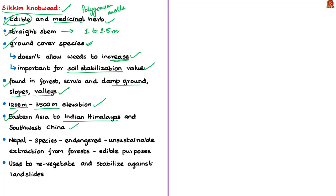The species is available in Bhutan, India, Indonesia, northern Myanmar, Nepal and Thailand. Particularly in India, it is found in the Tawang district of Arunachal Pradesh, Sikkim, Joshimath of Uttarakhand, and Lahaul and Spiti and Chamba districts of Himachal Pradesh.